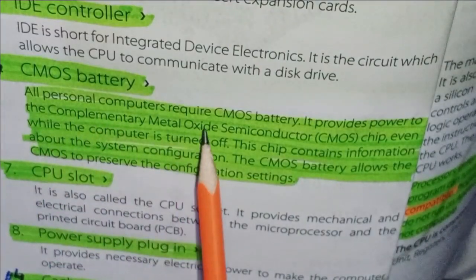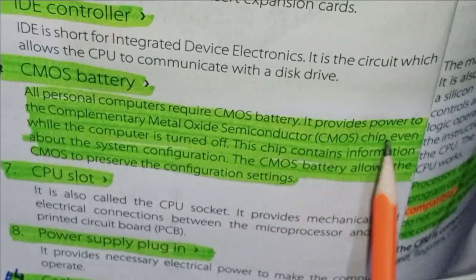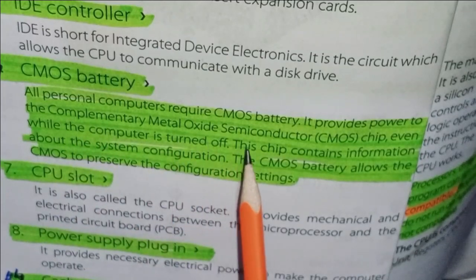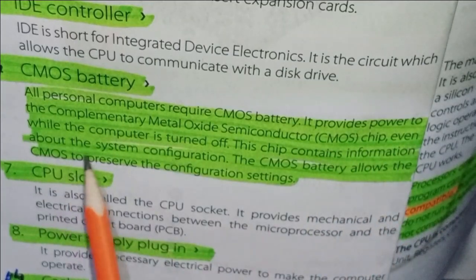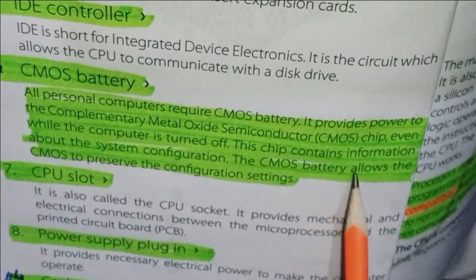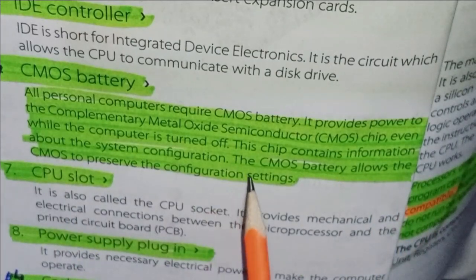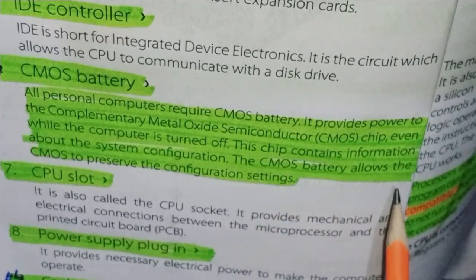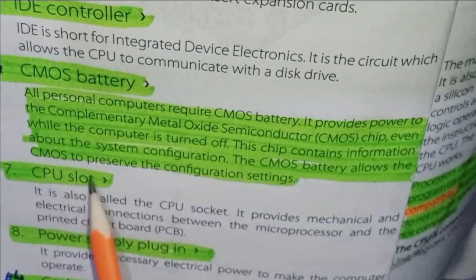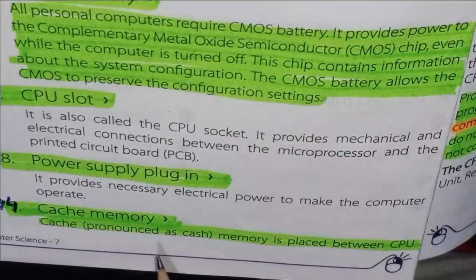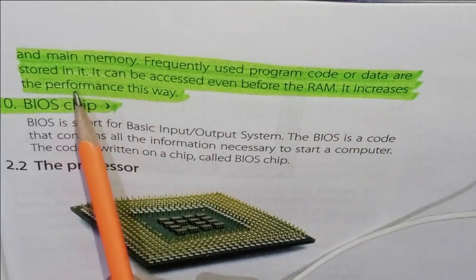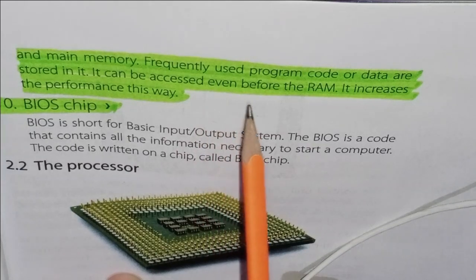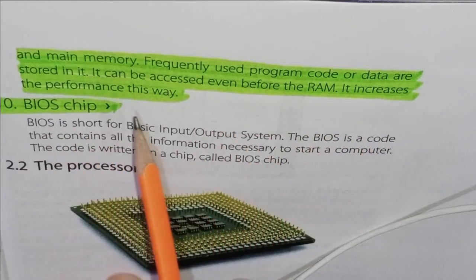CMOS Battery: All personal computers require a CMOS battery. It provides power to the complementary metal oxide semiconductor (CMOS) chip. Even while the computer is turned off, this chip contains information about the system configuration. The CMOS battery allows the CMOS to preserve the configuration settings. Cache Memory: Cache memory is placed between the CPU and main memory. Frequently used program code or data are stored in it. It can be accessed even before the RAM, which increases performance.